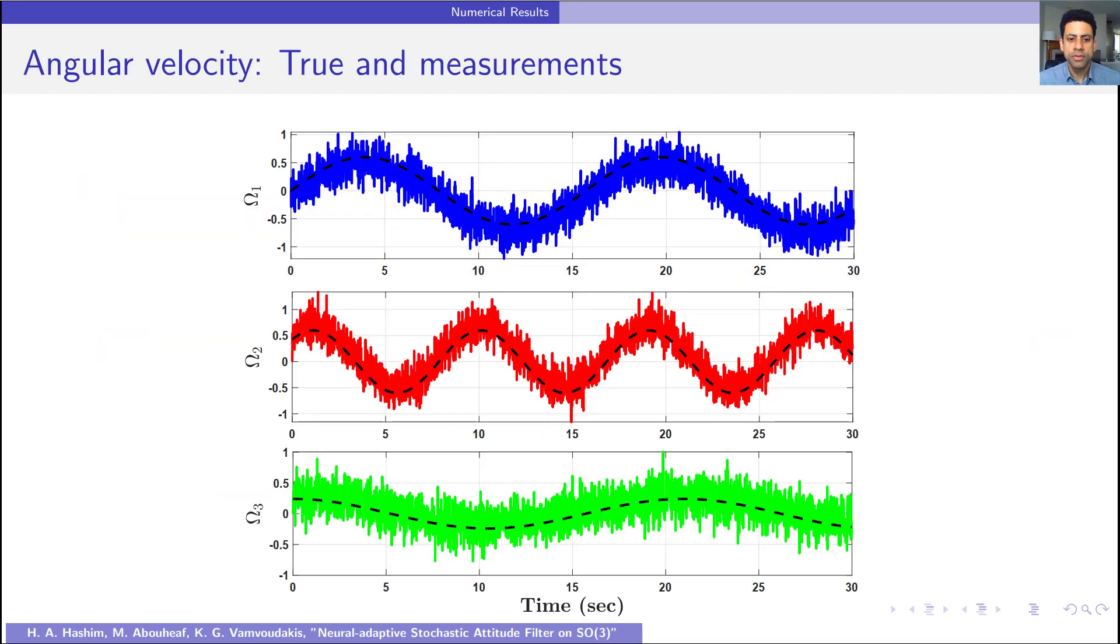This figure illustrates high value of noise corrupting angular velocity measurements in comparison to the true data. In this figure, we see that the dashed line refers to the true data, whereas the blue, red, and green solid lines refer to measurements.